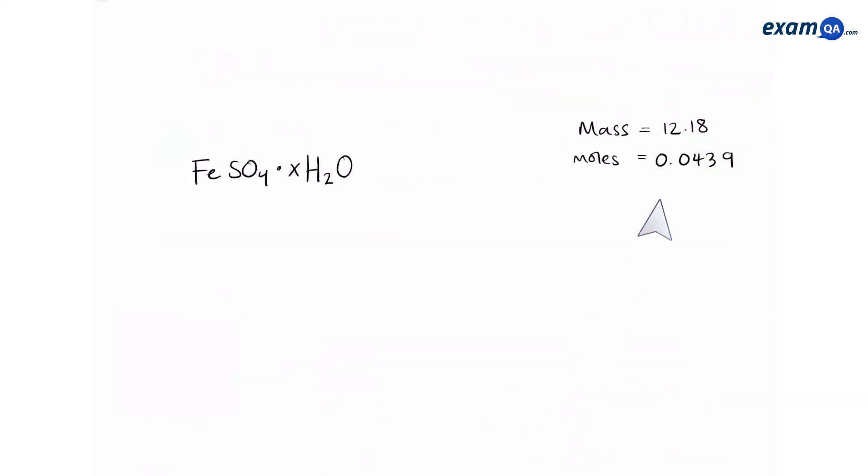Okay, so we know the mass of iron sulfate which is 12.18 grams and we also know the moles which is 0.0439. We can use our equation that MR is equal to mass over moles to work out the MR of iron sulfate.